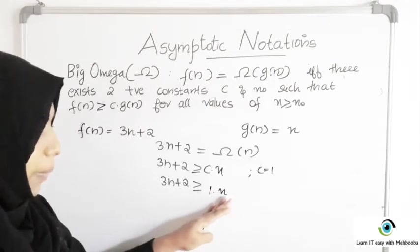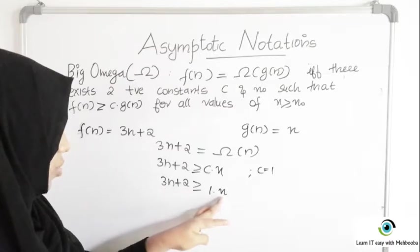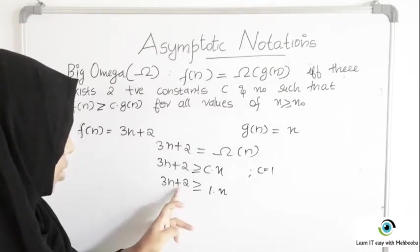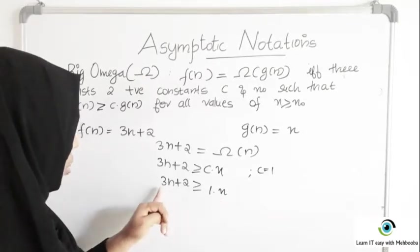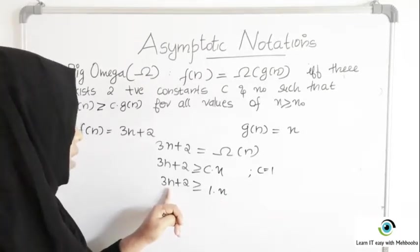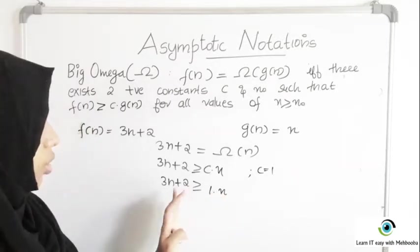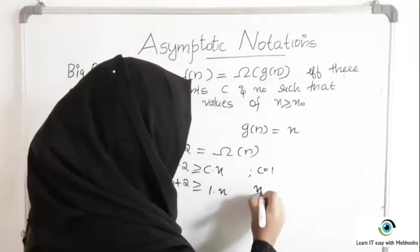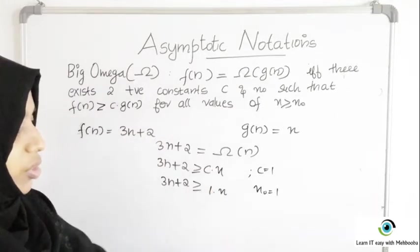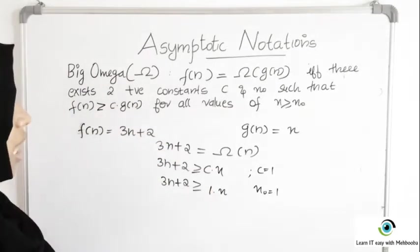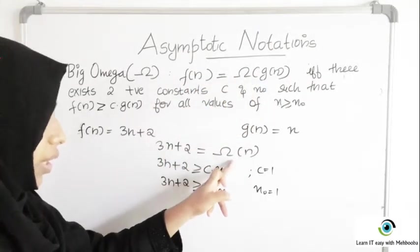Now I have to find the minimum value of N for which this inequality holds. When N equals 1, this is 3 plus 2 equals 5, and the right side is simply 1 — so 5 is greater than 1, that is fine. When N equals 2, this is 3 times 2 plus 2 equals 8, and this is 1 times 2 equals 2 — so this is always greater. So N0 is 1, the minimum value of N for which the inequality holds. Therefore I can say that F of N is Big Omega of G of N, that is 3N plus 2 is Big Omega of N.